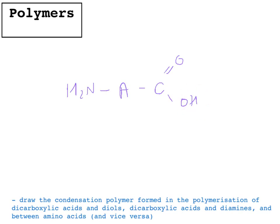So what you'll get is a repeating unit where you've got N, H, A, C double bond O, N, H, A, C double bond O, and so on. So that will then join up again with here. And that is two repeating units, but I just want to show you what it would look like.